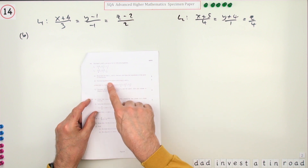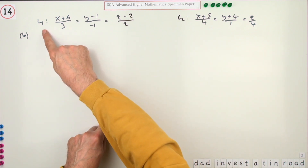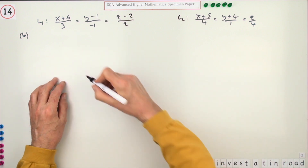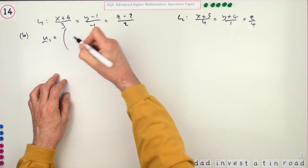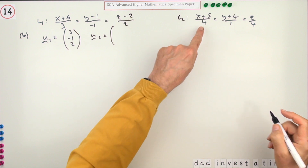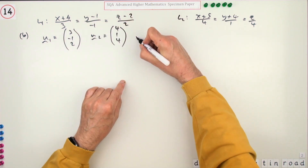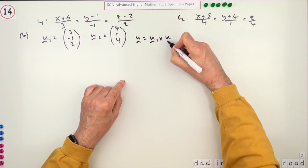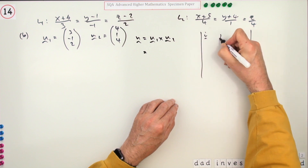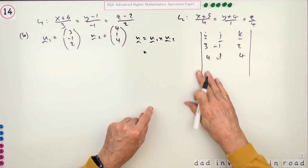Part b, for three marks: find the equation of the plane containing these two lines. If the two lines lie in a plane, then the cross product of their direction vectors must be perpendicular to the plane — that's the normal you need for the plane equation. The direction vectors, identifiable from the parameter parts, are (3, -1, 2) for line one and (4, 1, 4) for line two.